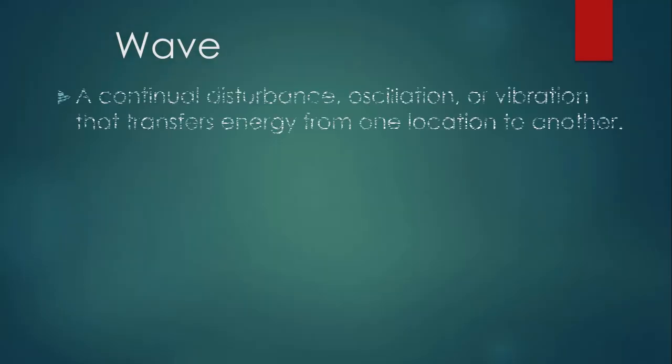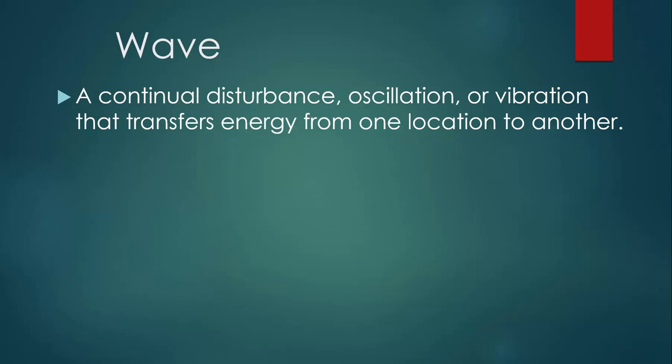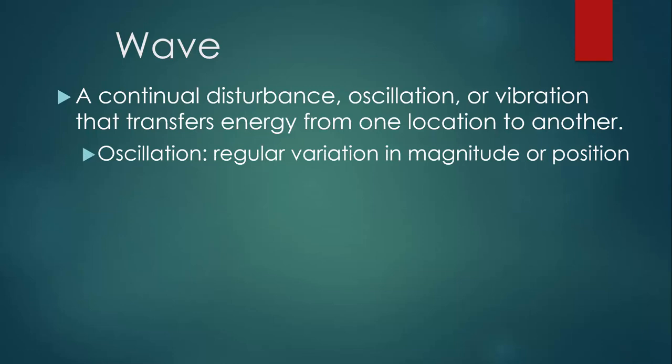But as far as we're concerned, a wave is a continual disturbance, oscillation, or vibration that transfers energy from one location to another. An oscillation is a regular variation in magnitude or position. So this is something moving up and down over and over again, or left and right over and over again.